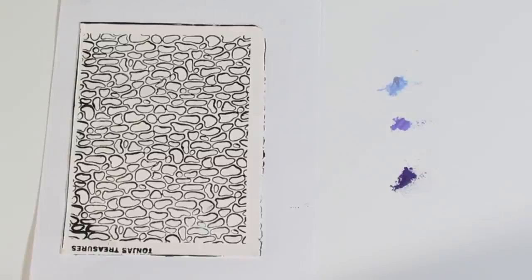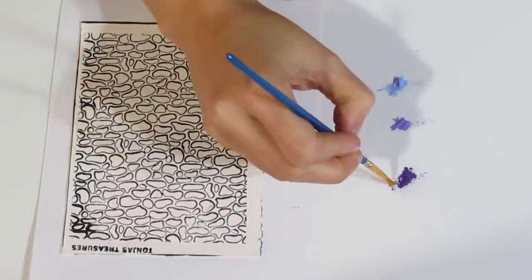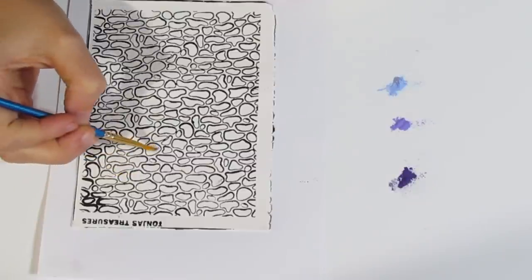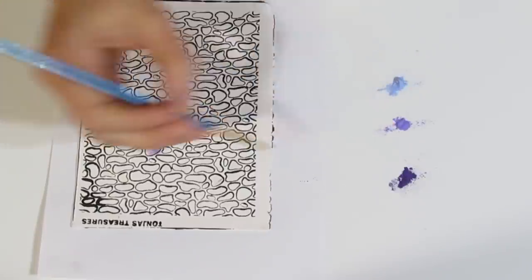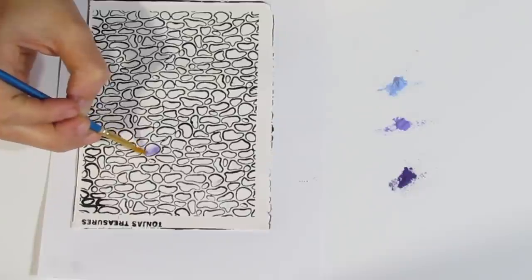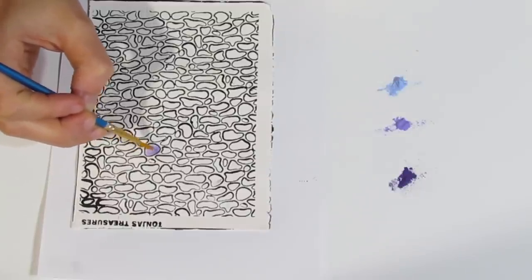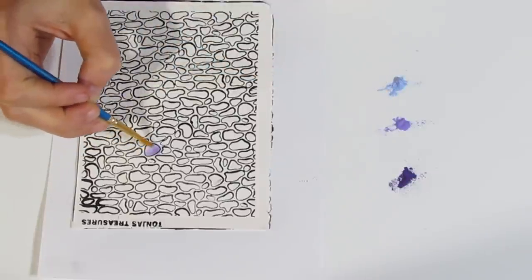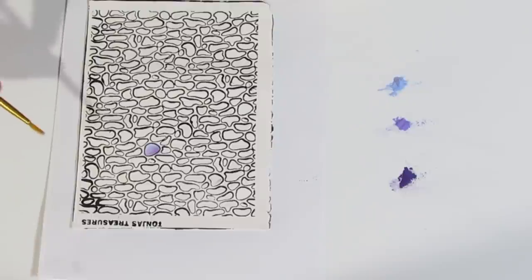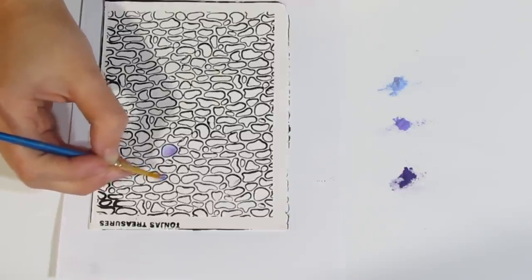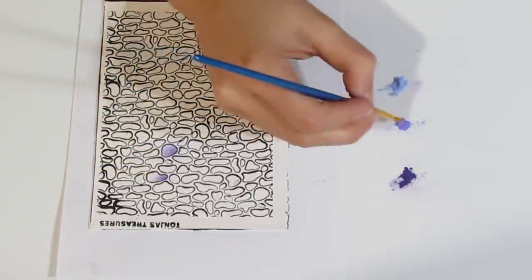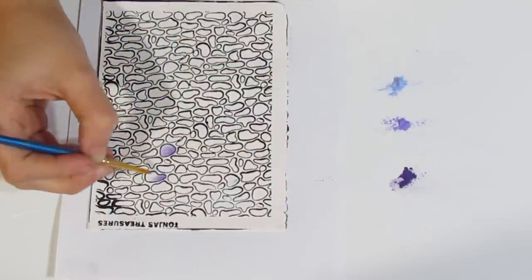So now I've got a nice fine tip brush. Let me just find the best one that I have. This looks pretty good. I'm just going to take some purple. And I'll just do that with quite a few different pebbles and I might do the blue ones. We'll see.